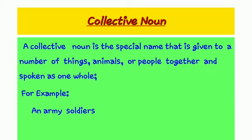Firstly, we discuss the collective noun, which is the remaining part of our previous lecture. A collective noun is the special name that is given to a number of things, animals or people that are grouped together and spoken as one whole.